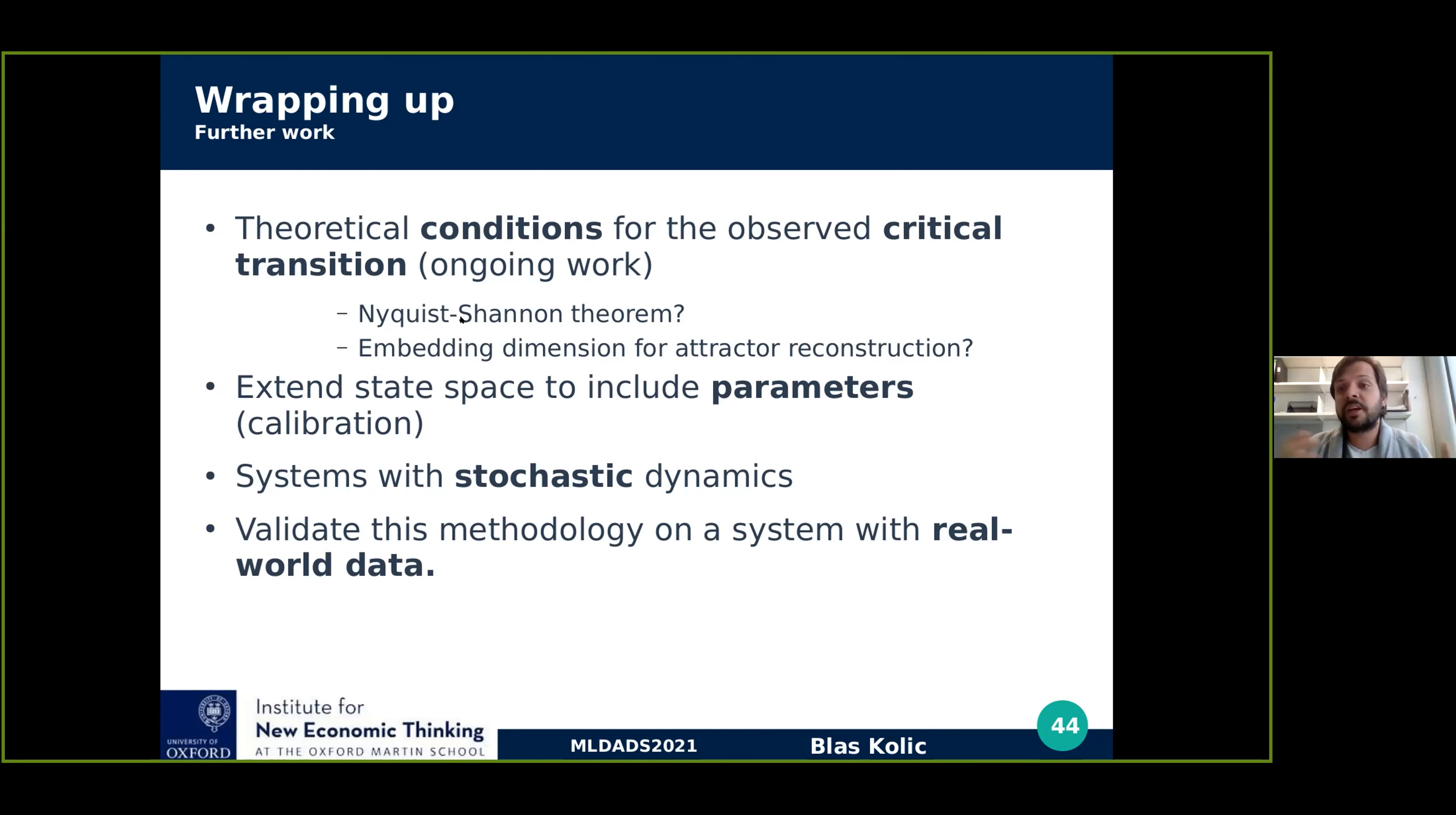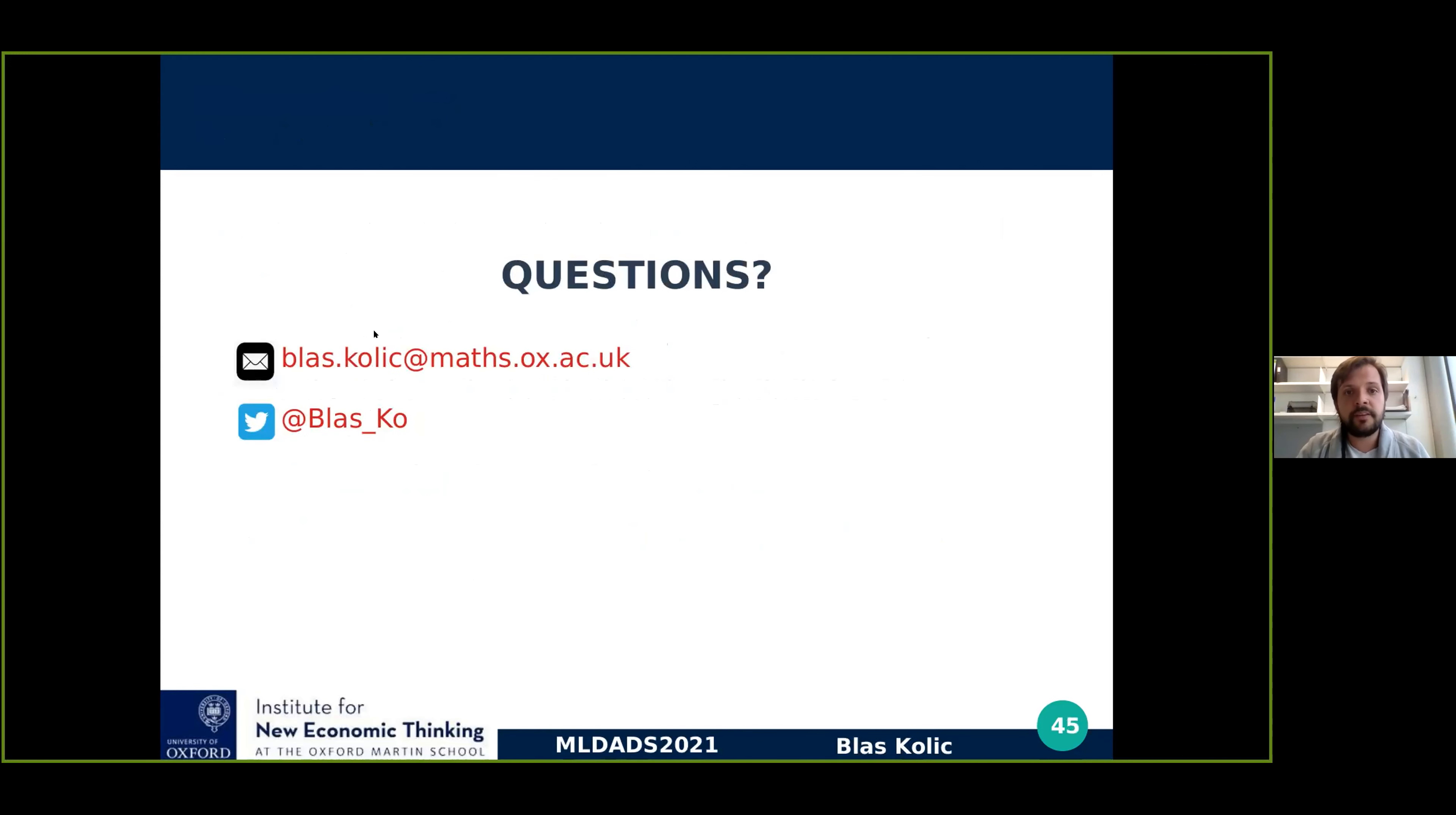We're actually working on the theoretical conditions for the critical transition that we observe. It might have to do with the Nyquist Shannon theorem of the sampling, minimum sampling to recover the signal without loss of information or with embedding dimension for the structural reconstruction. We are also extending the state space to include the parameters and give space for imperfect models. And of course, the more important thing is that we're trying to validate this methodology on systems with real-world data. I'm happy to take questions. Here are my details if you want to contact me. Thank you very much.